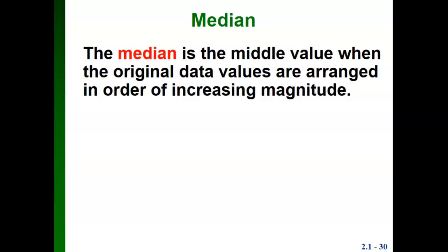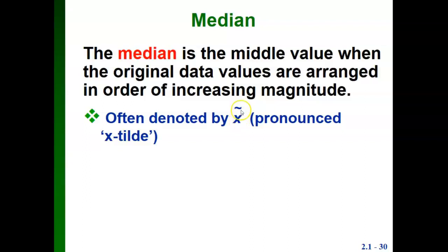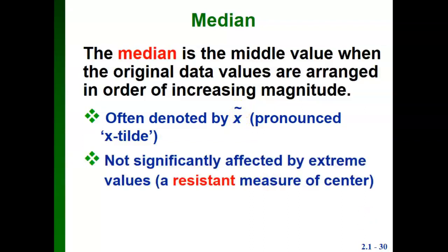The next measure of center we'll talk about is called the median. The median is the middle value when the original data values are arranged in order of increasing magnitude. If they're arranged from smallest to largest, we take the value that's in exactly the middle of the list. Sometimes we see the median written with an X with a tilde over it. The median is not significantly affected by extreme values because it only looks at position, not the actual values. This would be a resistant measure of center.